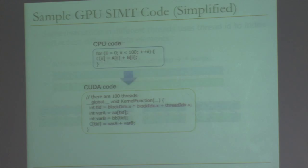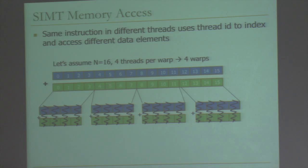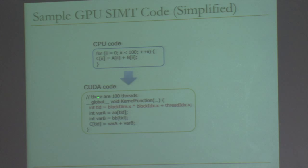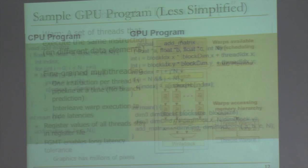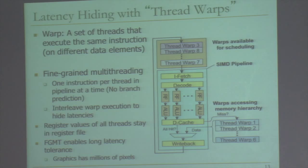The same instruction uses the thread ID to index and access different data elements. For an array of length 16 with four threads per warp, you get four warps, each executing on a different quarter of the array. On a GPU, you program a single thread — programmer's life is much easier. This is CUDA, NVIDIA's programming model. The GPU code is very similar to CPU code, except you specify the thread ID to access the appropriate data. You don't need to know the vector length.